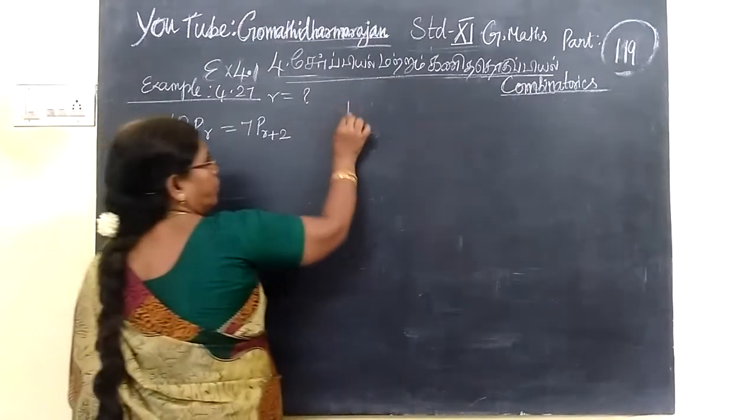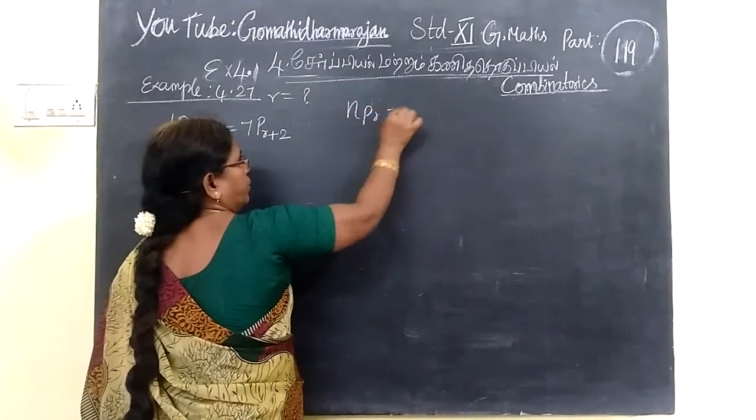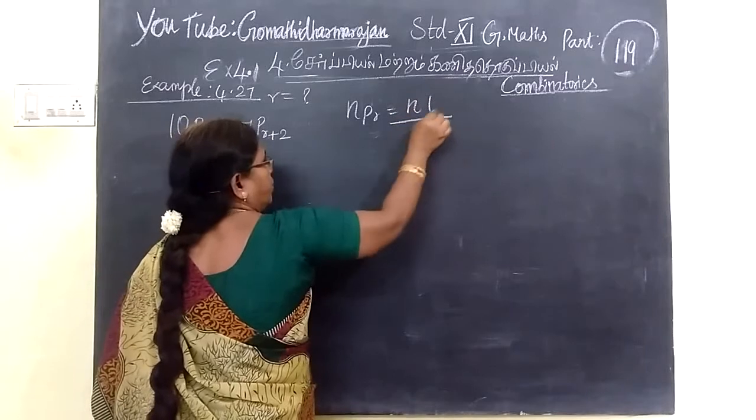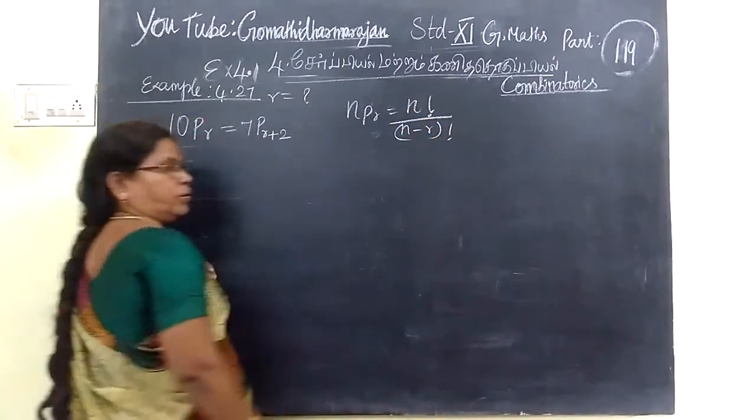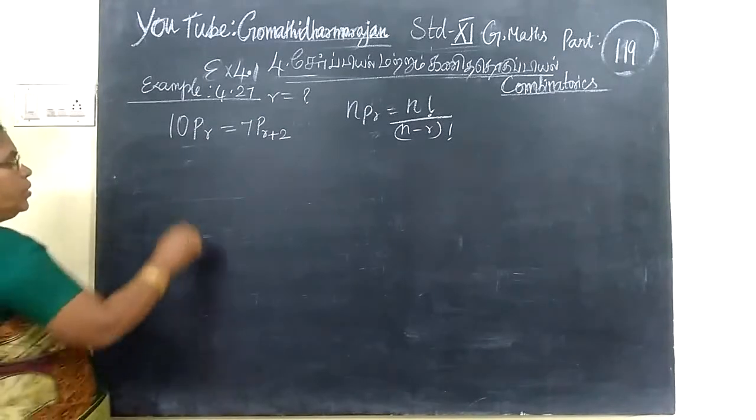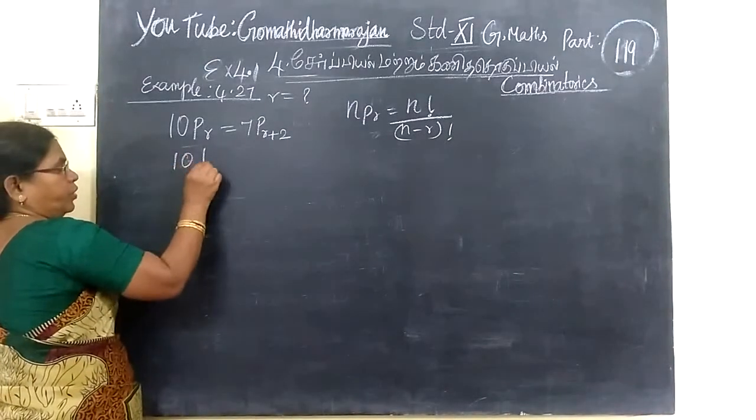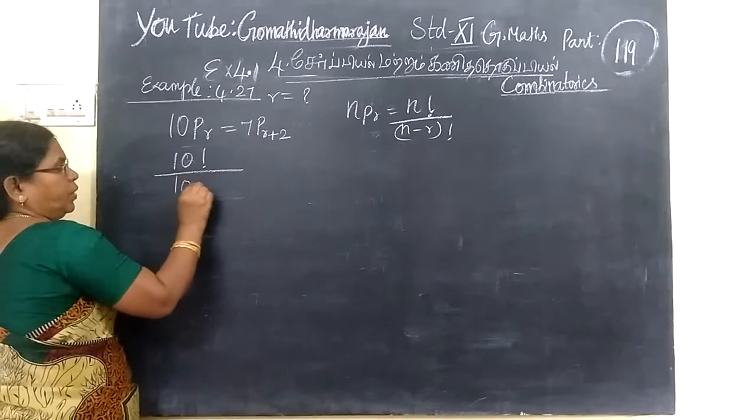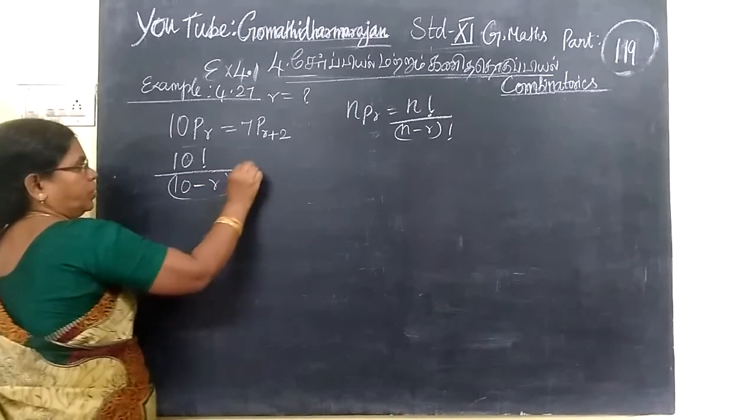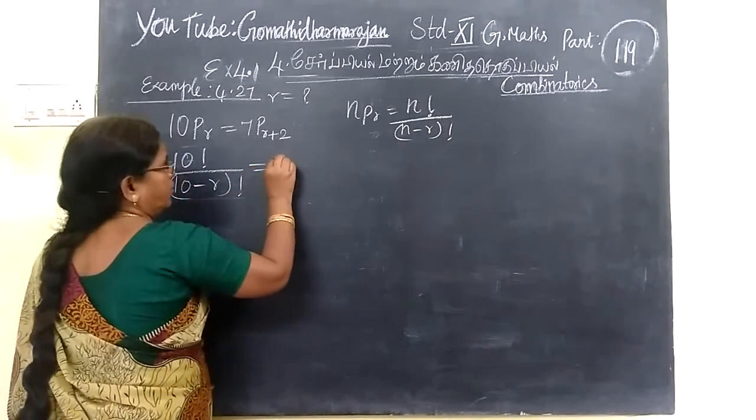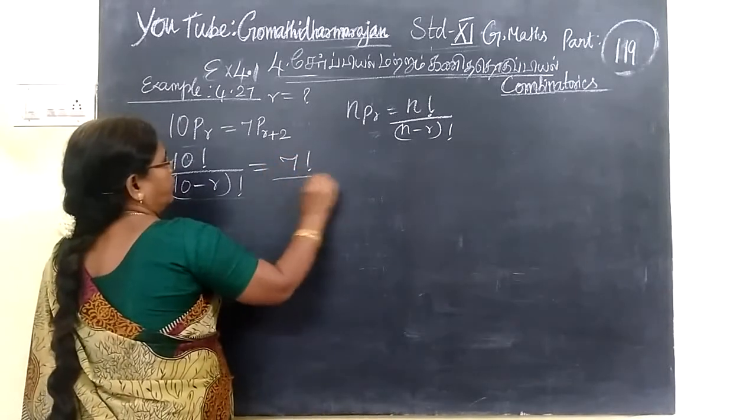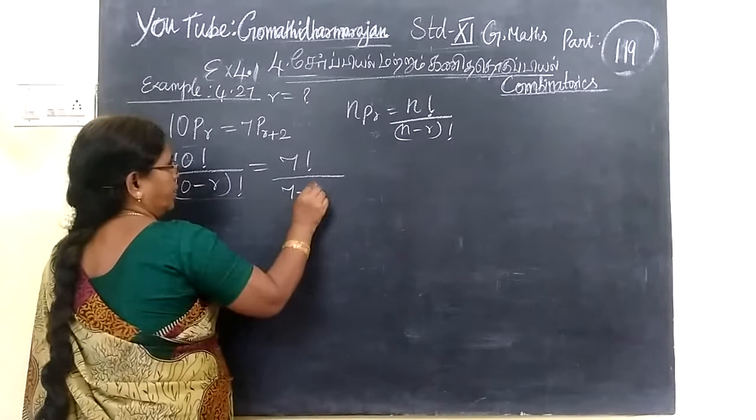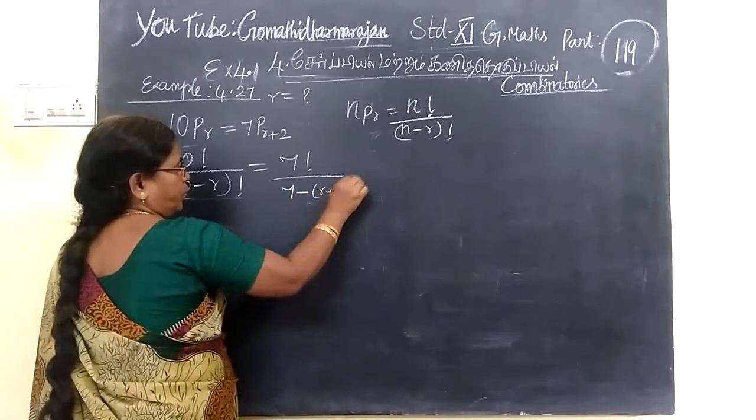Now you know nP_r equal to n factorial by n minus r factorial. So by using the formula, if you write this, 10 factorial by 10 minus R factorial equal to 7 factorial by 7 minus R plus 2 factorial.